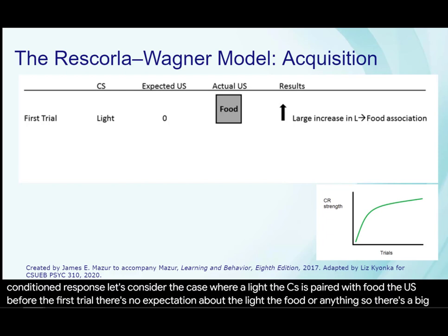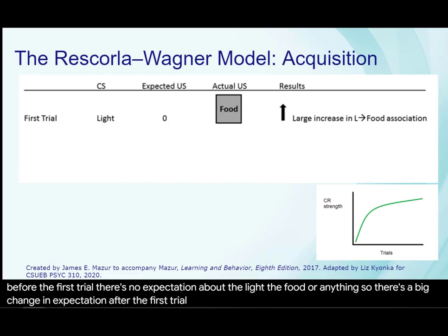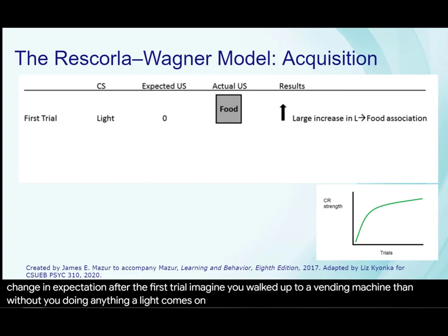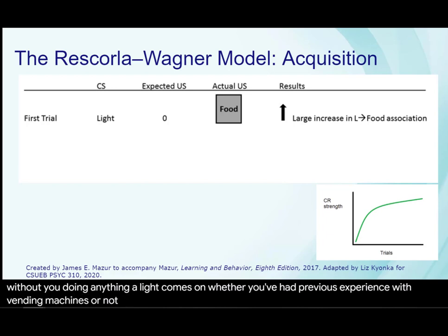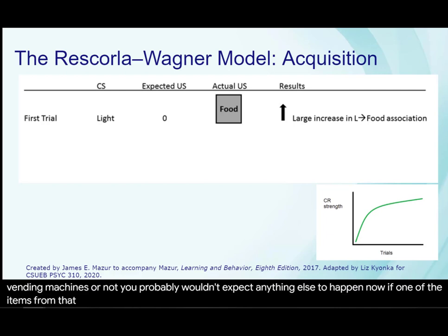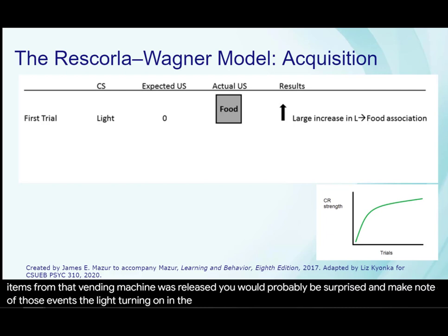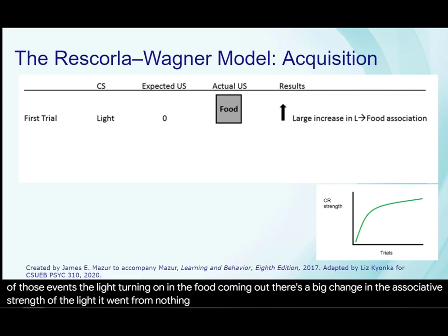So there's a big change in expectation after the first trial. Imagine you walked up to a vending machine, and without you doing anything, a light comes on. Whether you've had previous experience with vending machines or not, you probably wouldn't expect anything else to happen. Now if one of the items from that vending machine was released, you would probably be surprised and make note of those events — the light turning on and the food coming out. There's a big change in the associative strength of the light; it went from nothing to something.